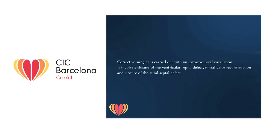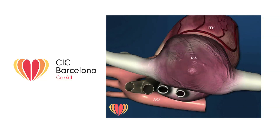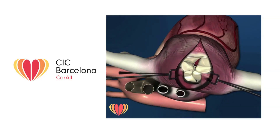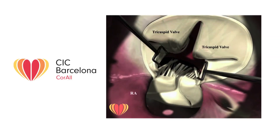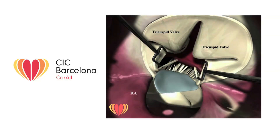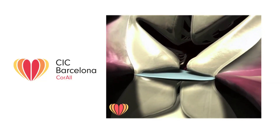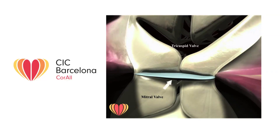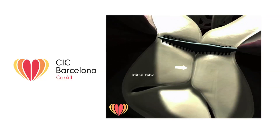Corrective surgery is carried out with extracorporeal circulation and involves closure of the ventricular septal defect, mitral valve reconstruction, and closure of the atrial septal defect. The first animation shows corrective surgery using two pericardial patches. First, the right atriotomy is carried out; then, once the anatomy of the defect has been evaluated, surgeons proceed with closure of the ventricular septal defect with a pericardial patch sutured to the rim of the defect. The leaflets of both the tricuspid and mitral valves are then reinserted onto the same patch, and by closing the cleft leaflets above the ventricular defect, the two anterior leaflets of the mitral valve unite to form a single anterior mitral leaflet.